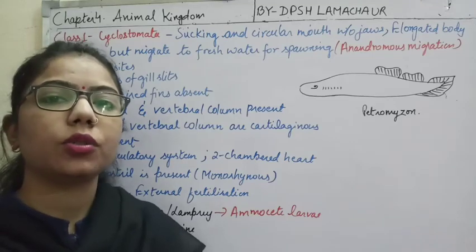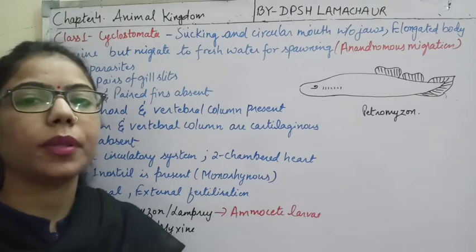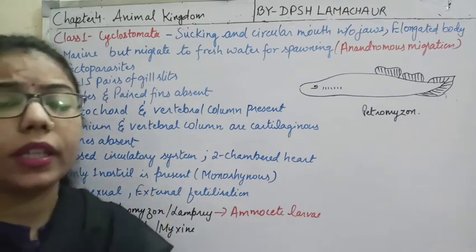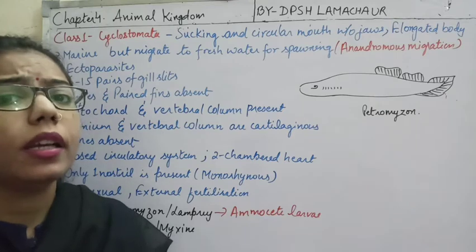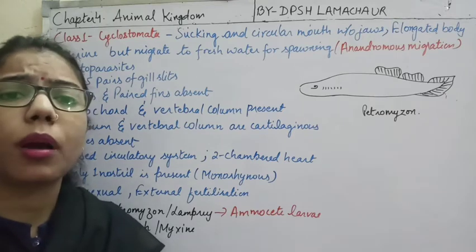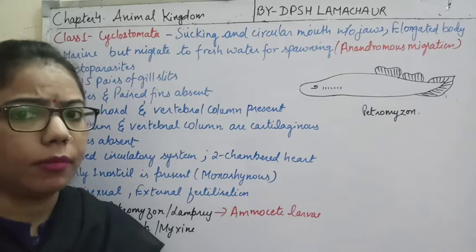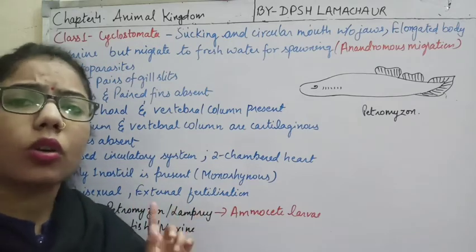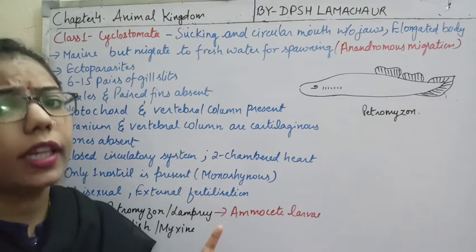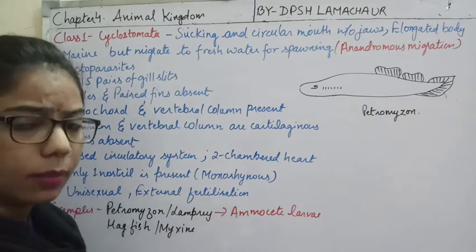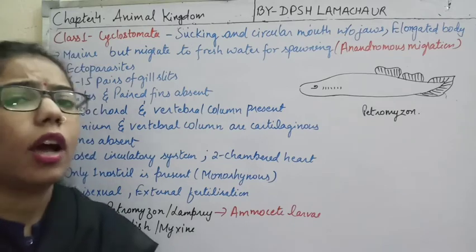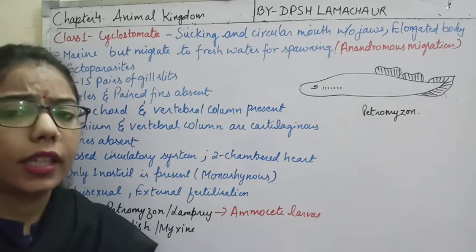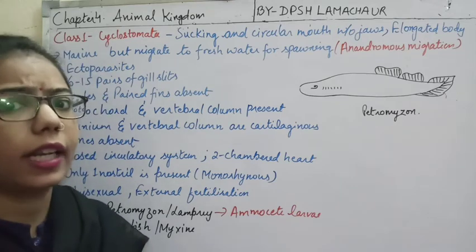Hello students, welcome back. Today I am Radha from DPS. Today I want to start another topic of the same chapter, Animal Kingdom. In this chapter we have discussed about all 11 phyla. The last phylum we discussed was the Chordates, and we divided Chordates into some divisions — Acraniata and Craniata.